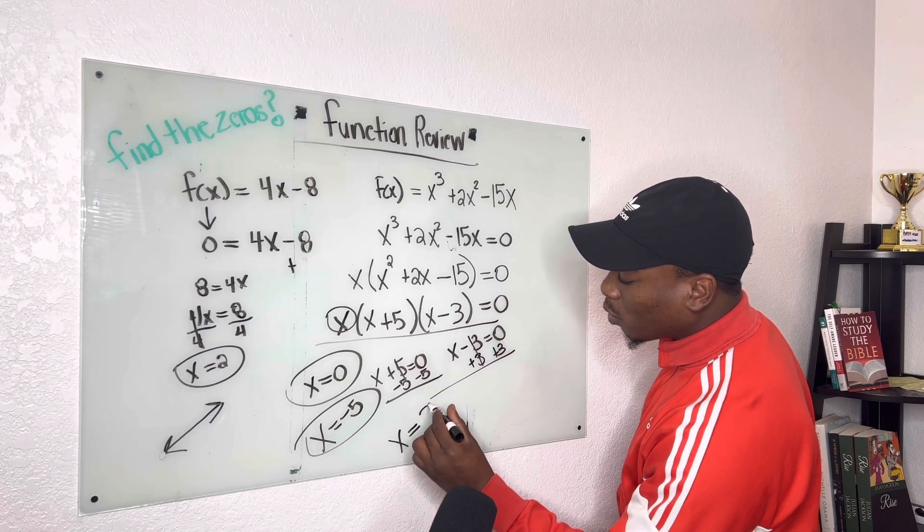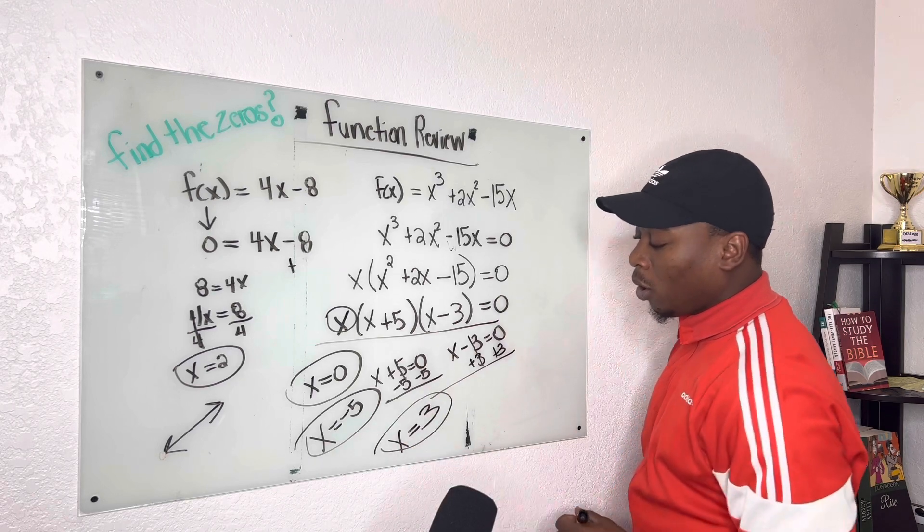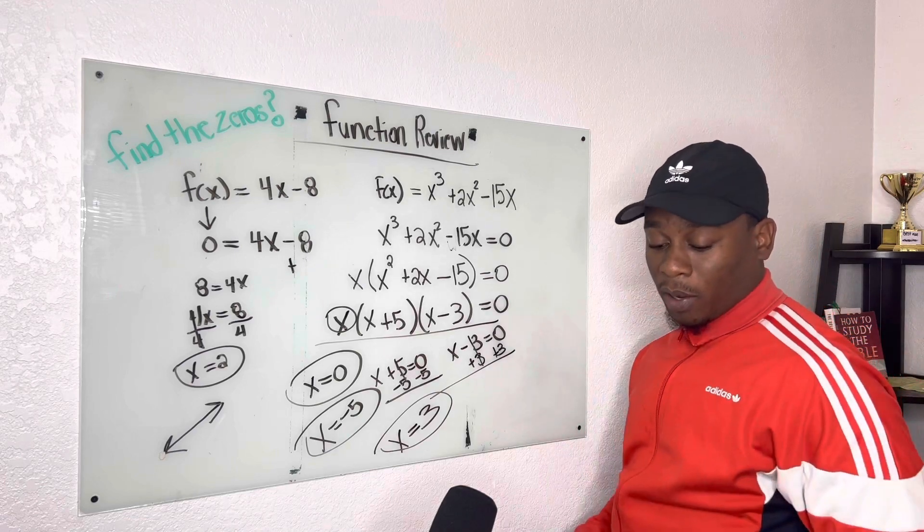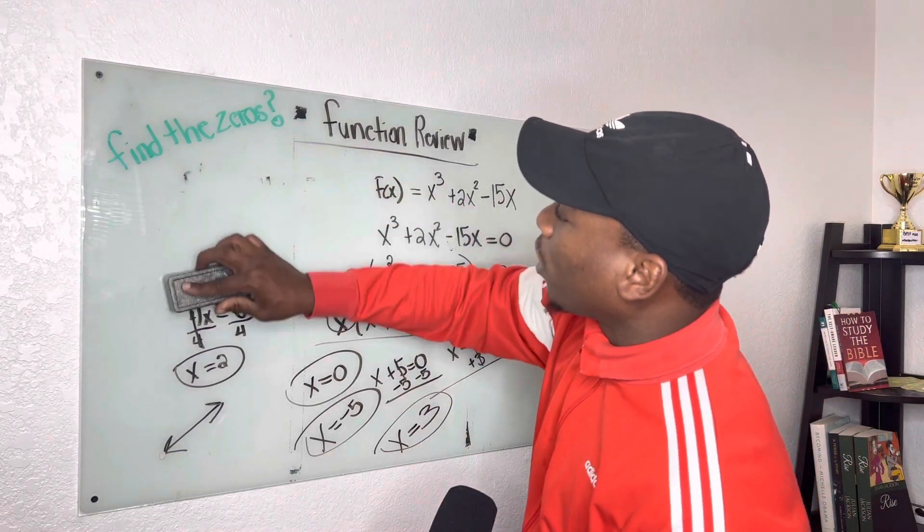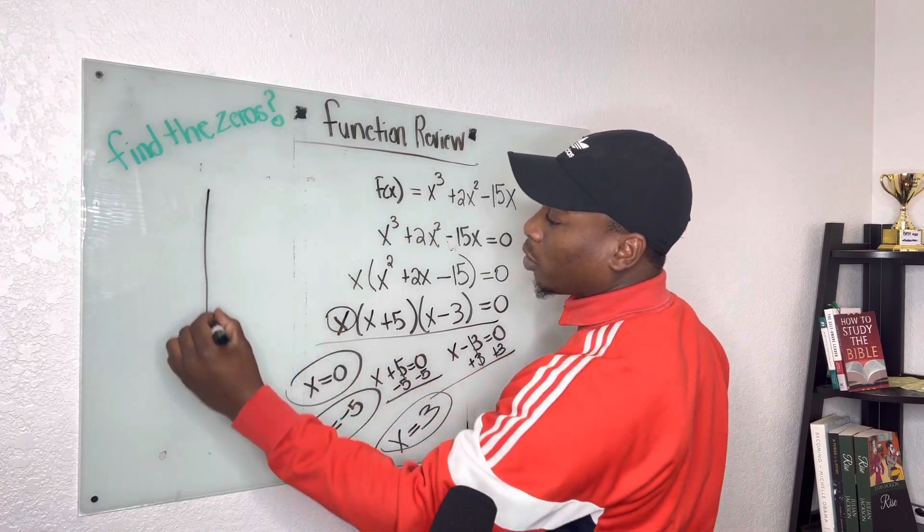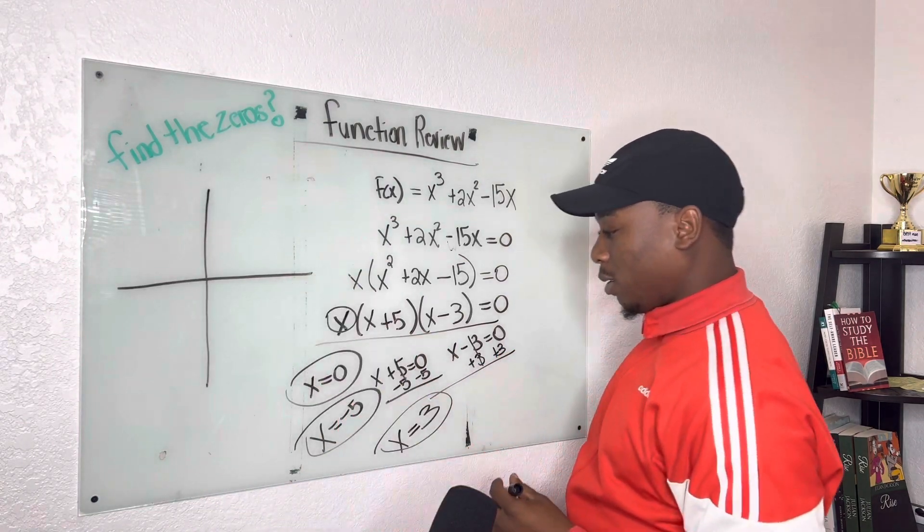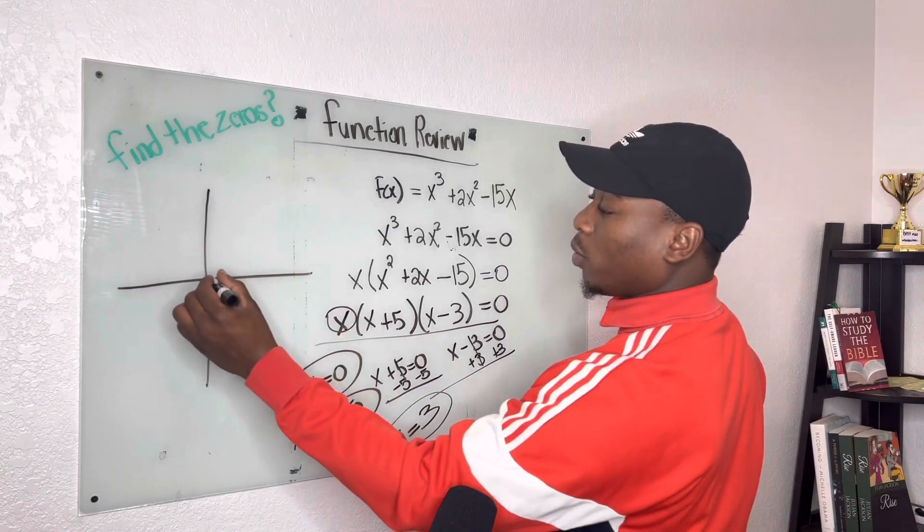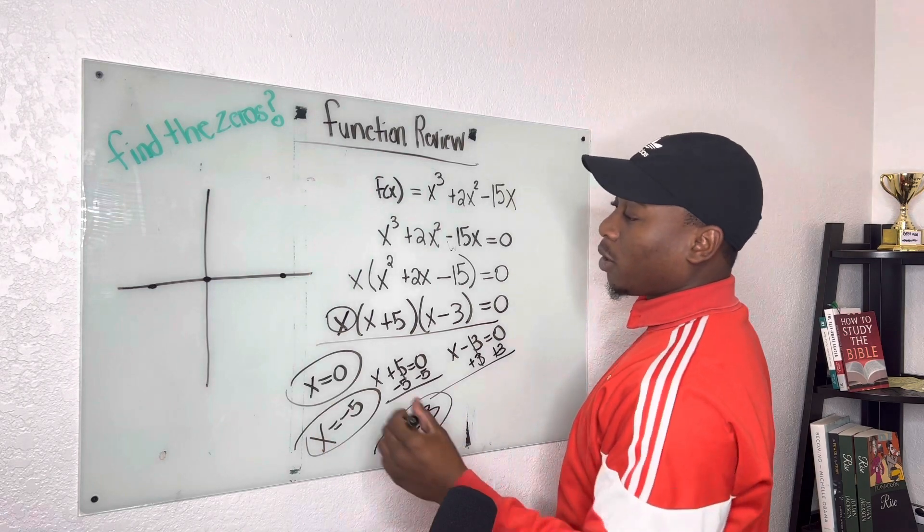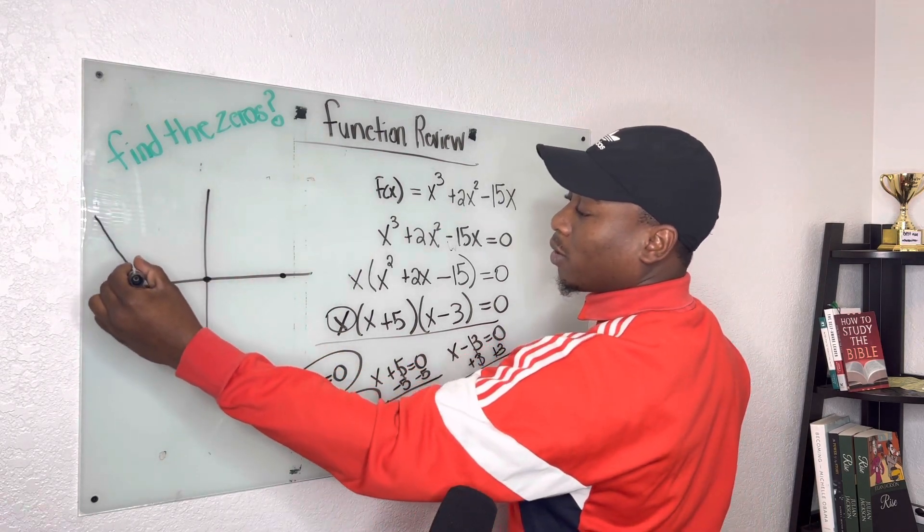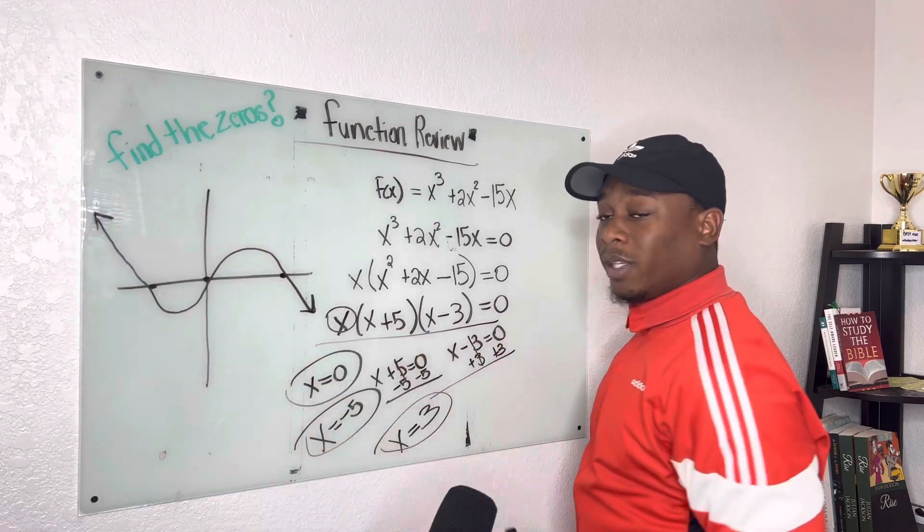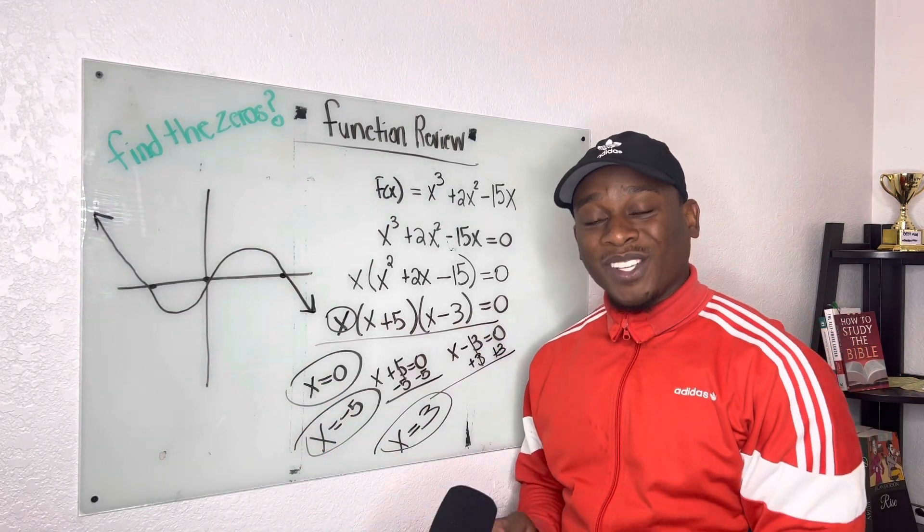So we know we have x is equal to 3. So what does this look like on a graph? So now, as we wrap this problem up, let's just erase right here and understand, anytime you have a graph that looks like this. All right? Let me see. So we have 0, negative 5. So if you have something like this, this is to the third power.